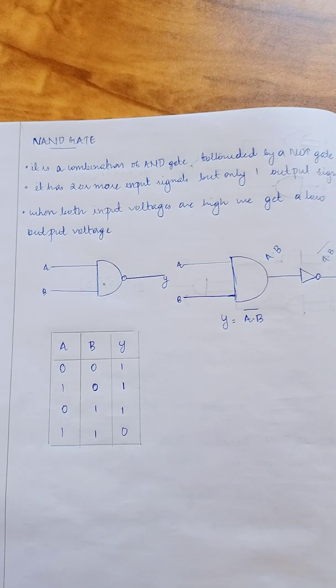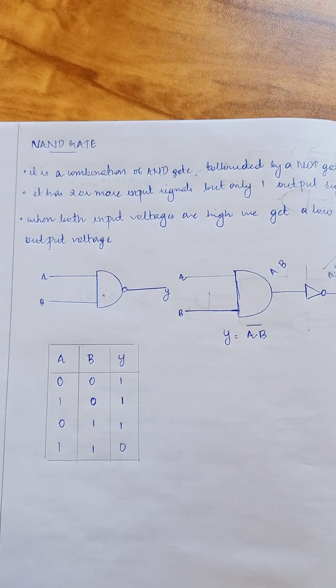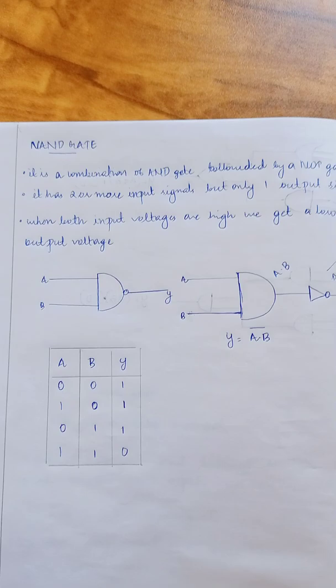Why are these two termed universal gates? Because we can implement any Boolean equation without the need to use any other type of logic gates. We have already discussed the NOR gate, so now we are going to discuss the NAND gate.